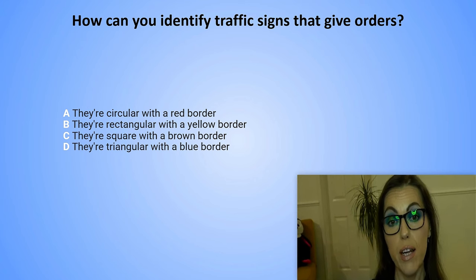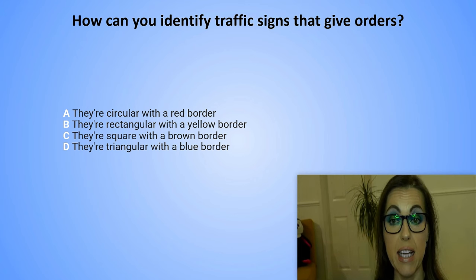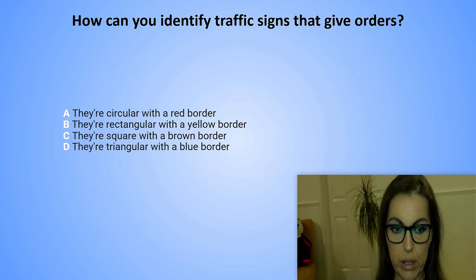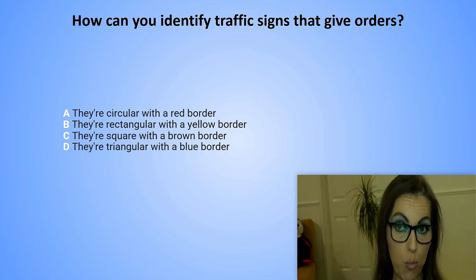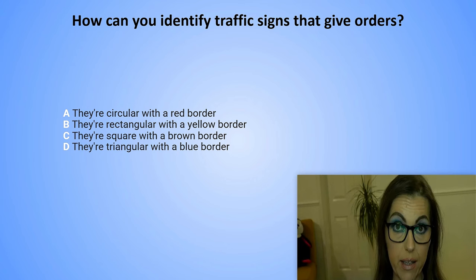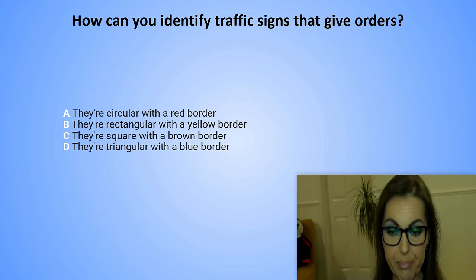How can you identify traffic signs that give orders? A. They are circular with a red border. B. They are rectangular with a yellow border. C. They are square with a brown border. Or D. They are triangular with a blue border.